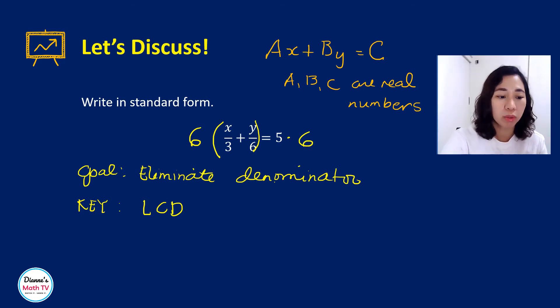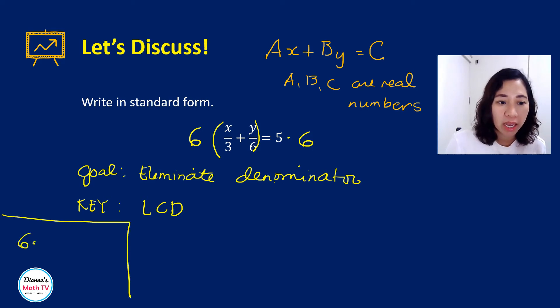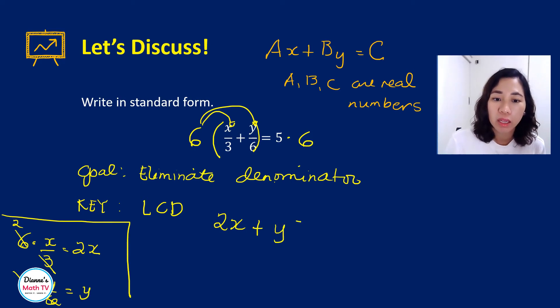So multiply both sides by 6. Then what will we do? We distribute. We have 6 times x over 3. This is my scratch, just to show you. 6 times x over 3, that's equal to 2x. Plus 6 times y over 6. That is equal to y. And it's equal to 30. There you go. So this is better.